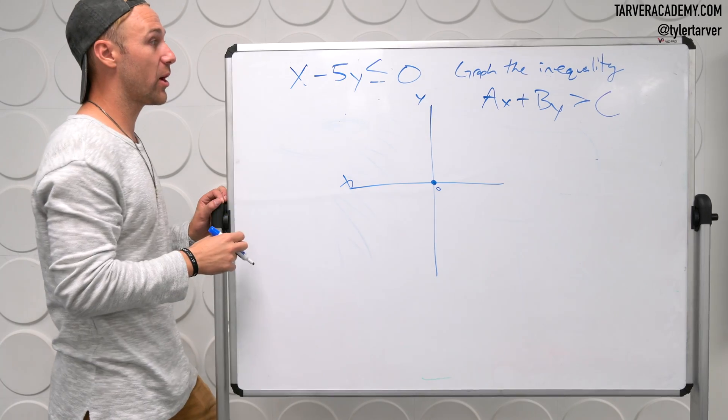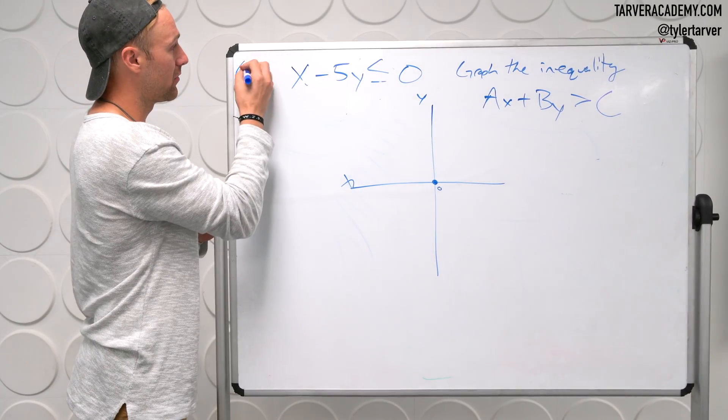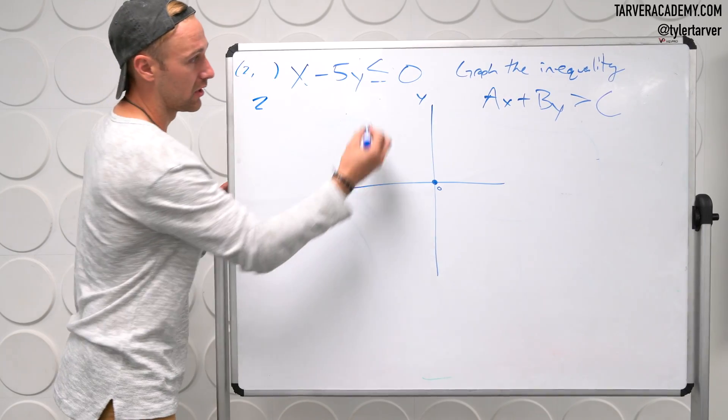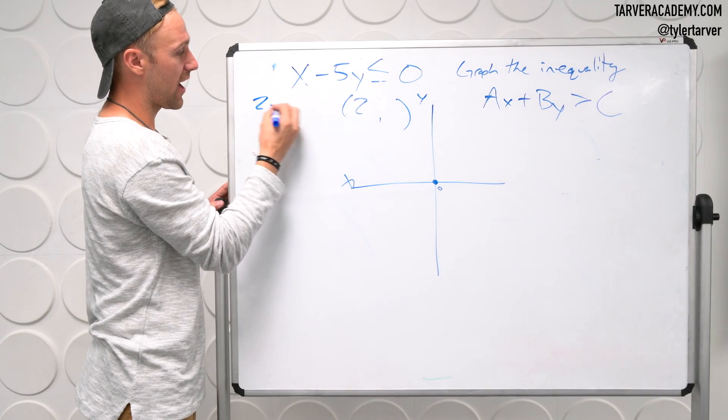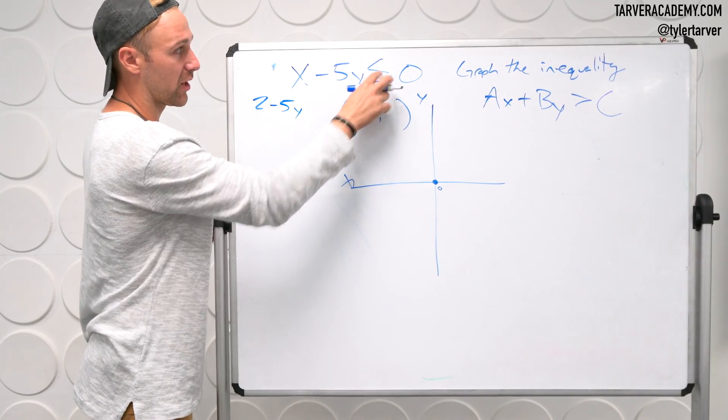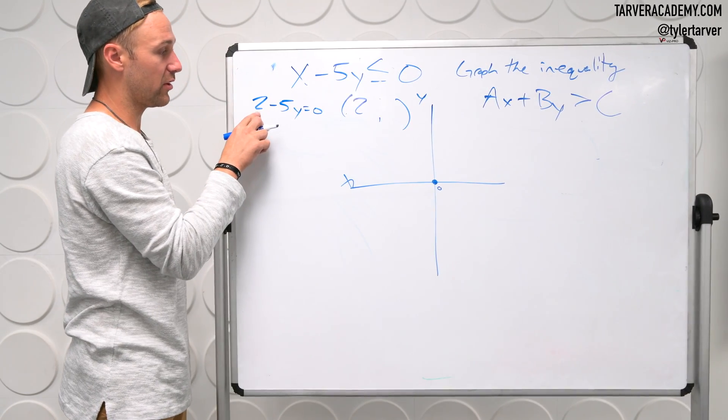We need two points that are not the exact same point. So that means we're going to have to plug a number in for x or y and find it. Not fun. What number do you want to put in for x? Two. So our x is going to be two. That's really small. So our x is two. And then we just solve for our y. Like I said, we can pretend like this is an equal sign right now because we're just plotting points. What do I do to that two?